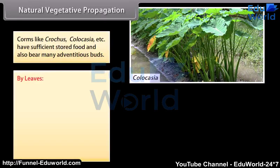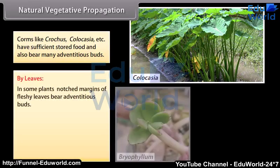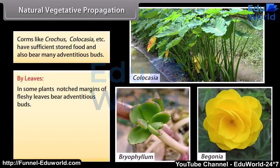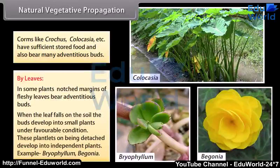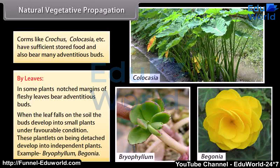In some plants, notched margins of fleshy leaves bear advantageous buds. When the leaf falls on the soil, the buds develop into small plants under favorable conditions. These plantlets, on being detached, develop into independent plants. Examples include Bryophyllum and Begonia.